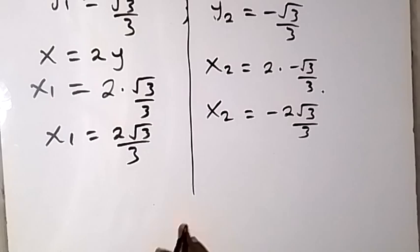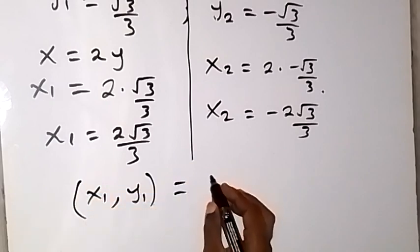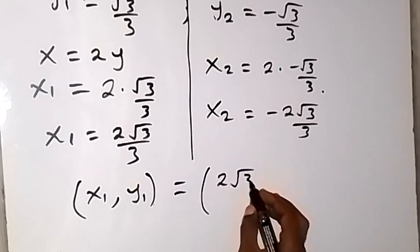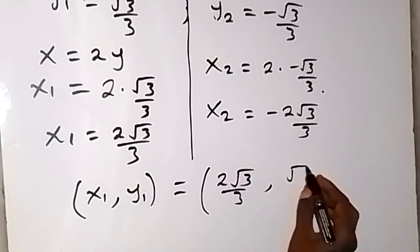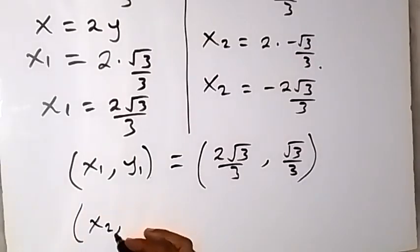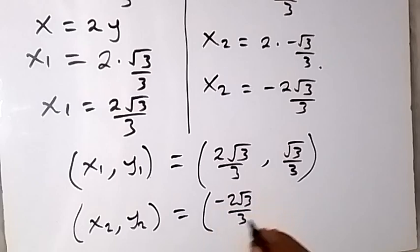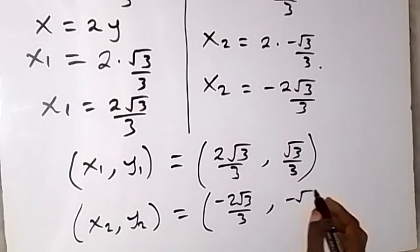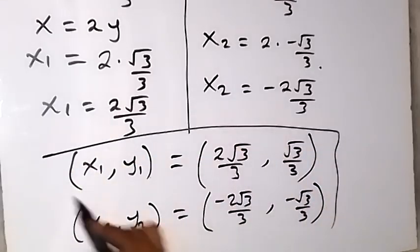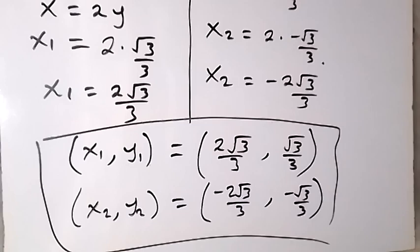So therefore, we can conclude that we have two sets of solutions. The first set is x1 comma y1 equals to 2 root 3 over 3 comma root 3 over 3. And the second set is x2 comma y2 equals to minus 2 root 3 over 3 comma minus root 3 over 3. These are the solutions to this problem. We can also check to confirm whether the solutions are correct. Thank you for watching. Don't forget to subscribe for more videos. See you in the next class, and bye for now.